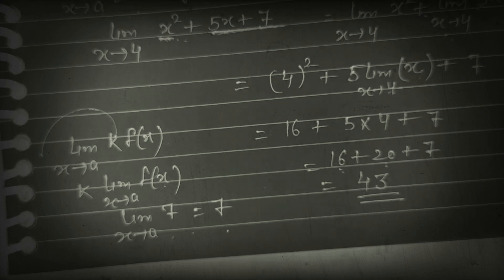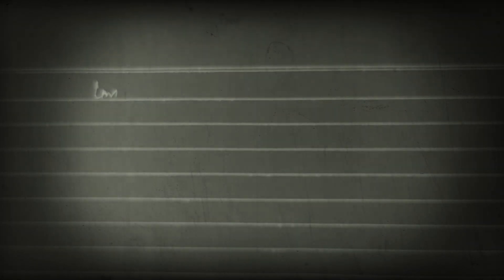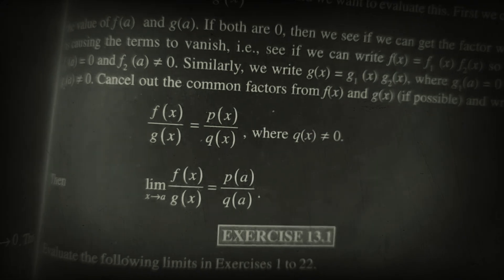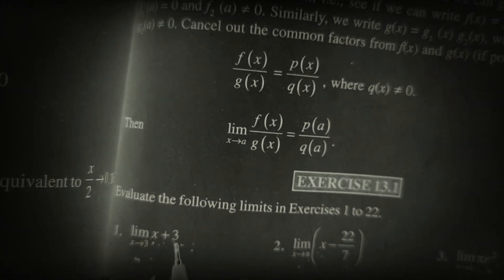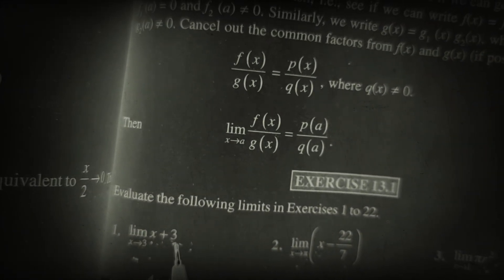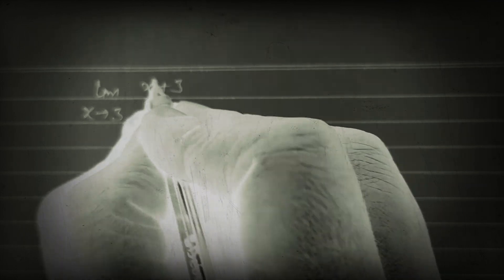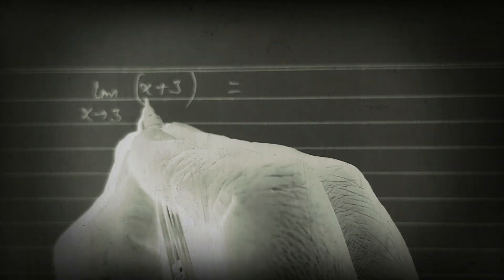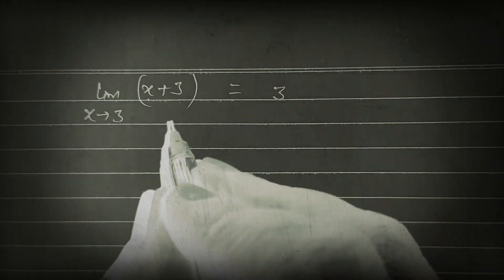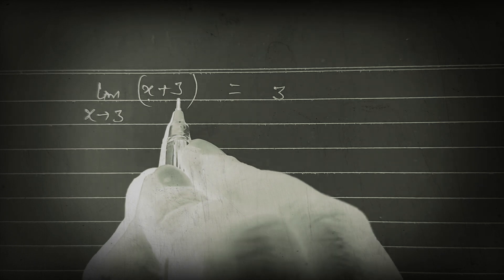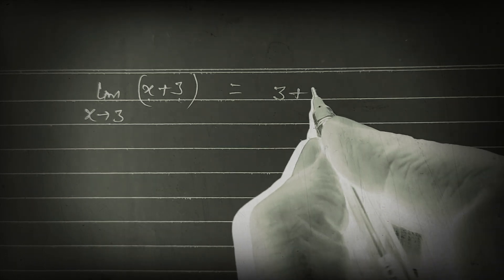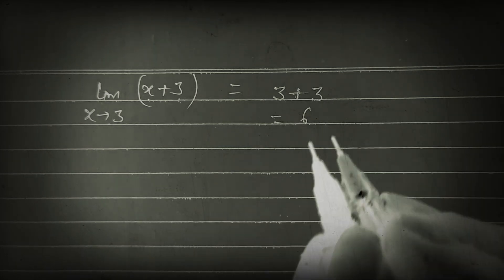One more example related to this. First question of exercise 13.1 — suppose it is x + 3. We put limit on both: limit x tends to 3 of x gives 3, and limit of constant 3 has no effect, so it is 3. Thus 3 + 3 = 6.